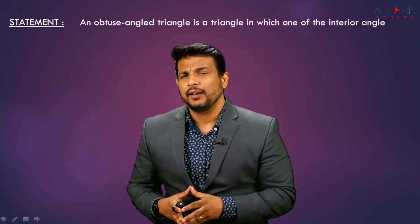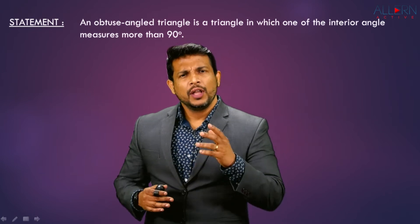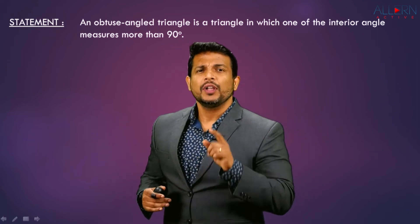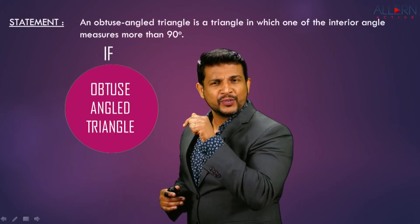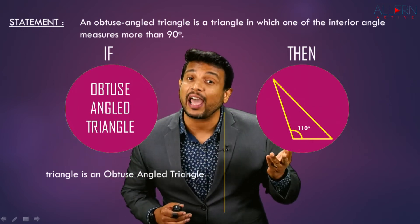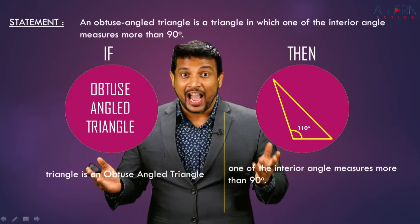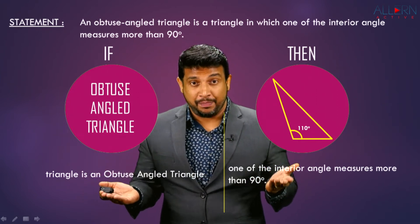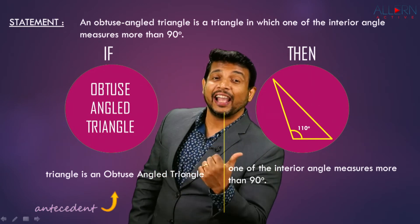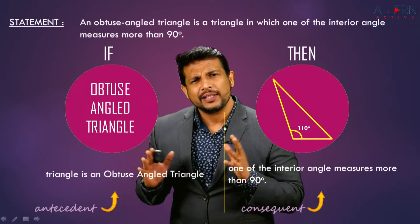Let's take another example: 'An obtuse angle triangle is a triangle in which one of the interior angles measures more than 90 degrees.' This is not in conditional form, so let's rewrite it. If the triangle is an obtuse angle triangle, then one of the interior angles measures more than 90 degrees. The statement between 'if' and 'then' is the antecedent, and what follows 'then' is the consequent.